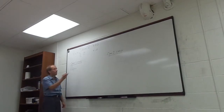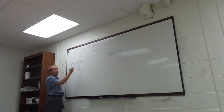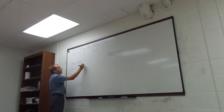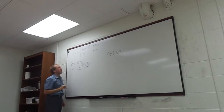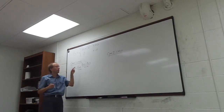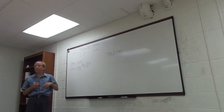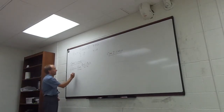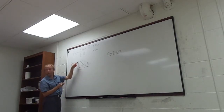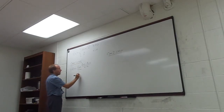The limit as x approaches c of f(x) minus f(c) all over x minus c. So we can plug in everything that we know. Remember, c is 0. So this is really the limit as x goes to 0. If x is approaching 0, then it doesn't equal 0, so when I plug in f(x), I'm using the top part of the piecewise definition.